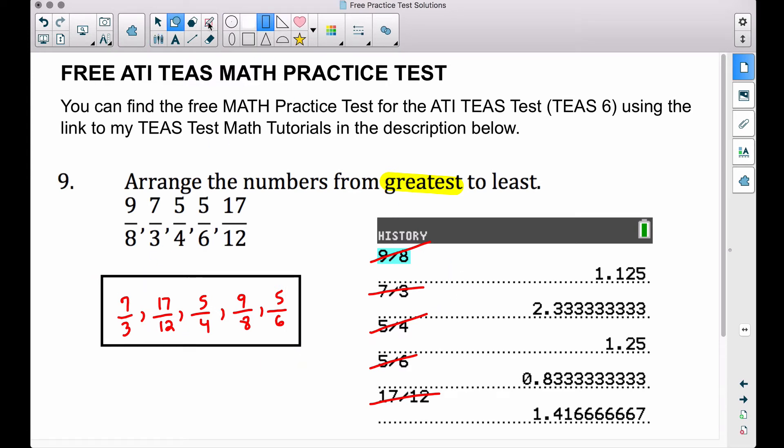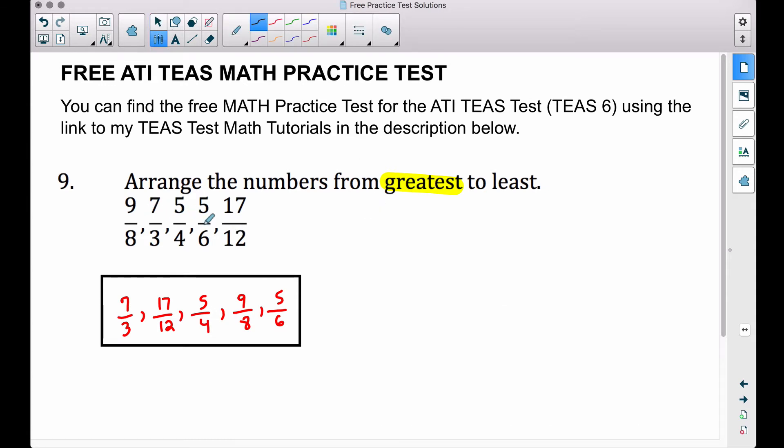But I do want to show you another way of doing this without having to rely on thinking about money. Let's look at all these fractions again and let's look at the denominators. We got an 8, a 3, a 4, a 6, and a 12. The number 24 is a common denominator to all of these numbers. In fact, it is the least common denominator, or also referred to as the least common multiple. 24 is the first number that 8 can multiply into, 3 can multiply into, 4, 6, and 12—all of these denominators go into 24.